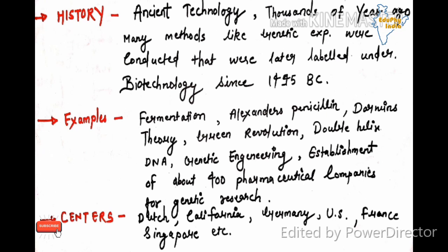Later there were many methods like genetic experiments were conducted that were later labeled under biotechnology. Most probably it is a very old technology since 1945 BC. Examples: fermentation, Alexander's penicillin, Darwin's theory, green revolution, double helix DNA, genetic engineering, and establishment of about 400 pharmaceutical companies for genetic research.